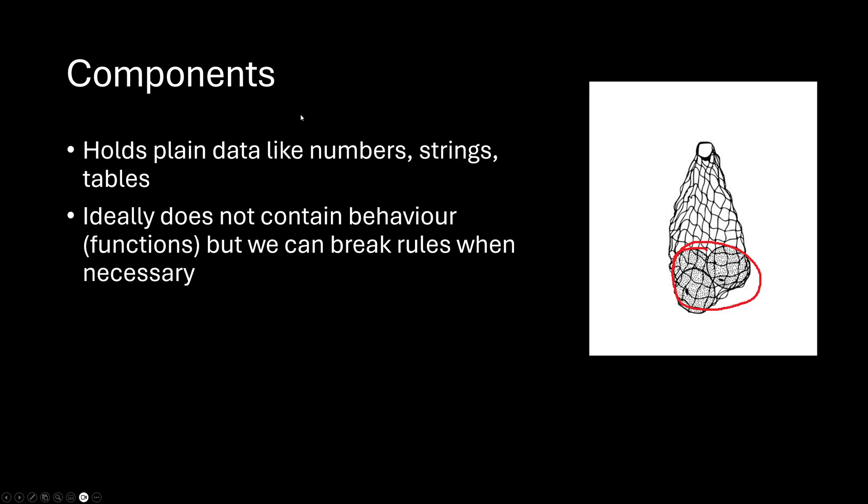Now I'm going to go a little more in depth about the specifics of ECS, starting with components, since I think it's easiest to explain. Components are just data — that's it. Nothing special, just plain data. Ideally they don't contain functions, but honestly it's okay to break rules. Sometimes having functions as the data itself is the cleaner code solution. But generally speaking, components don't contain functions or behaviors; they just contain plain data like numbers, strings, and tables. An example is in this picture where a component is denoted as this ball.